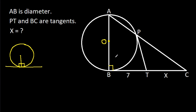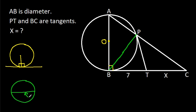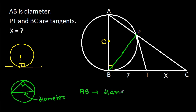Now, if we join BP, then in any circle, the diameter makes an angle of 90 degrees at the circumference. So angle APB will be 90 degrees — this angle will be 90 degrees.